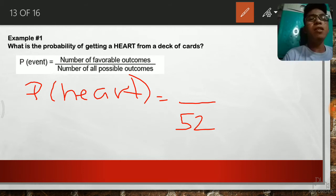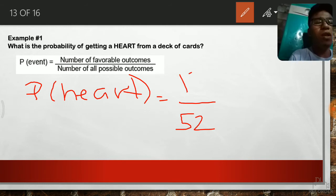How about the number of all favorable outcomes? Since our event is to get a heart or draw a heart from a deck of cards, that means our favorable outcome is getting a heart. Now, let's think. How many hearts are there in those 52 pieces of cards? From ace to king, all those characters have one heart each.